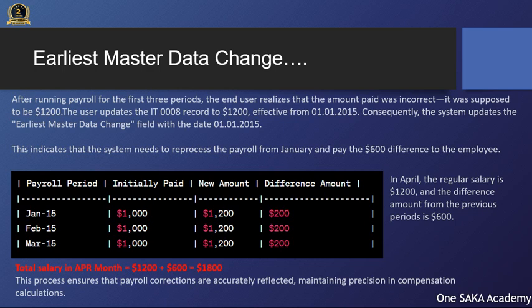In April, the regular salary is $1,200, and the difference amount from the previous periods is $600. Total salary in April equals $1,200 plus $600 equals $1,800. This process ensures that payroll corrections are accurately reflected, maintaining precision in compensation calculations.